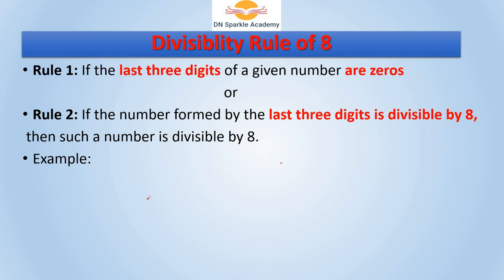Let's understand by example. The first example is 7000. Here we check the last 3 digits — they are 0, so this satisfies rule number 1, meaning this number is divisible by 8. The same applies to the second number — last 3 digits are also 0, so it is also divisible by 8.